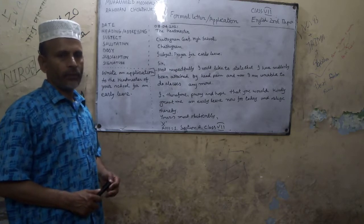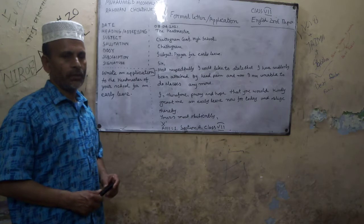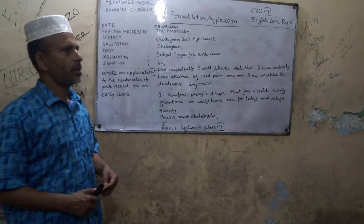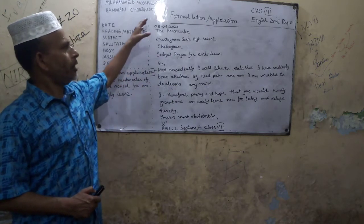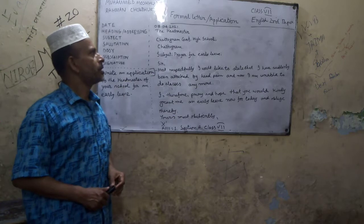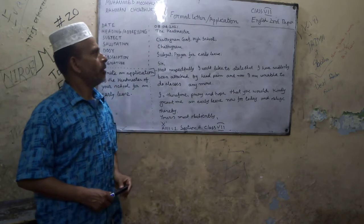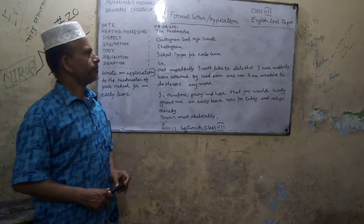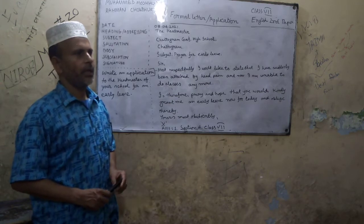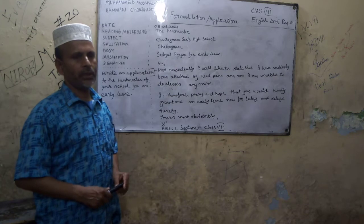Now we should save ourselves by staying at home and following the rules, regulations, and safety measures. Now we are going to discuss an event of the second paper, Class 7, and it is about formal letter writing for an application. I hope you are going to open your books and khatas and pay attention to me and write down the necessary things.